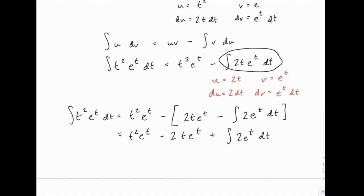And then the last step is just to do that integral, which is very straightforward. It's just 2e to the t, of course, plus c. And there's our final answer for the whole problem.